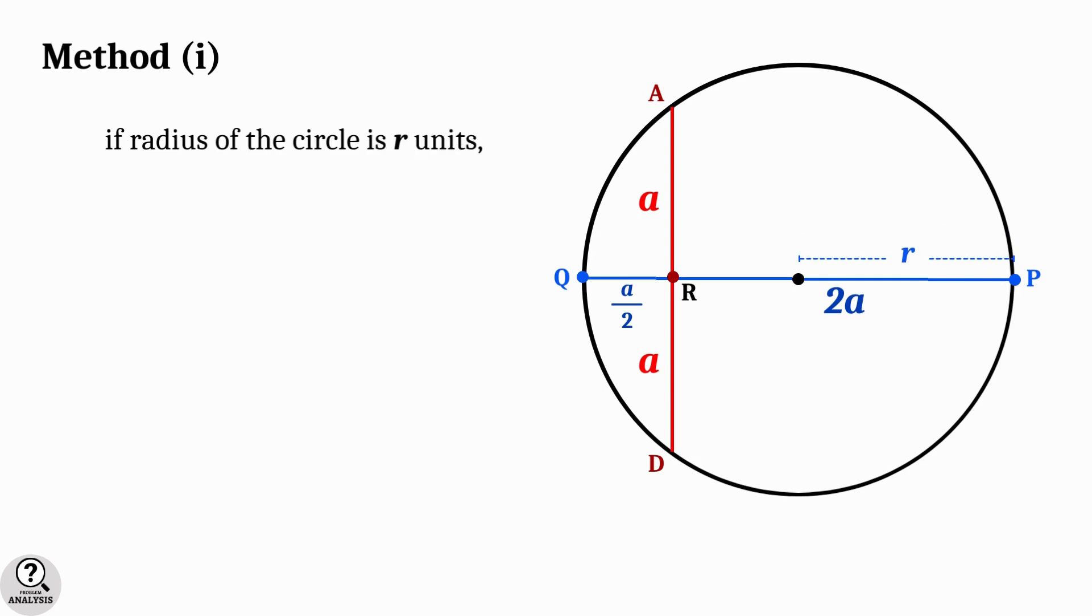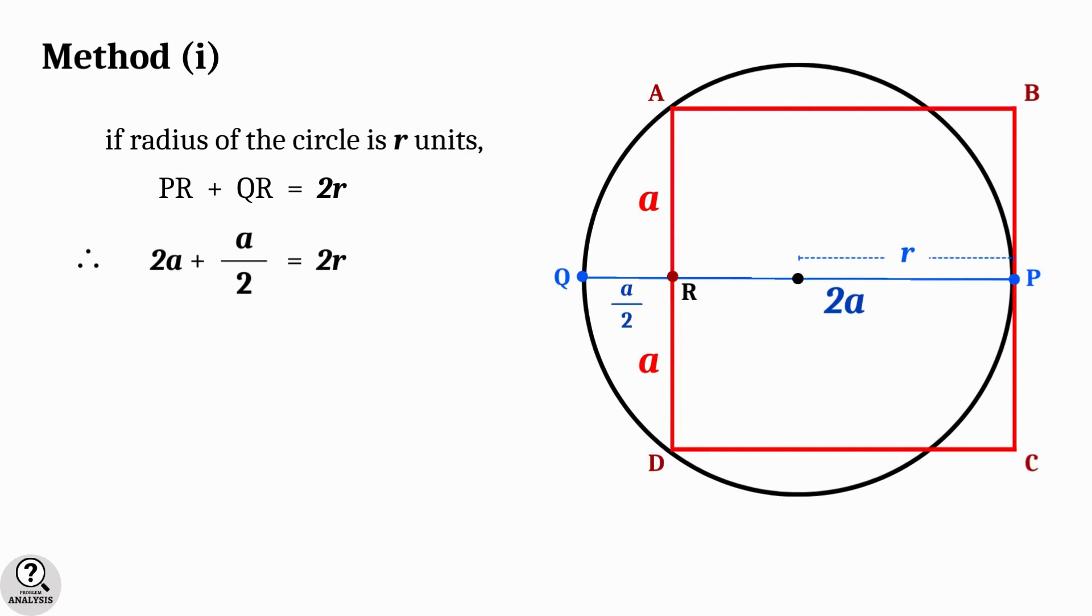By simplification we get x equal to a by 2. Now if we take the radius of the circle to be R units, then PR plus QR will be equal to 2R, which is the diameter of the circle.